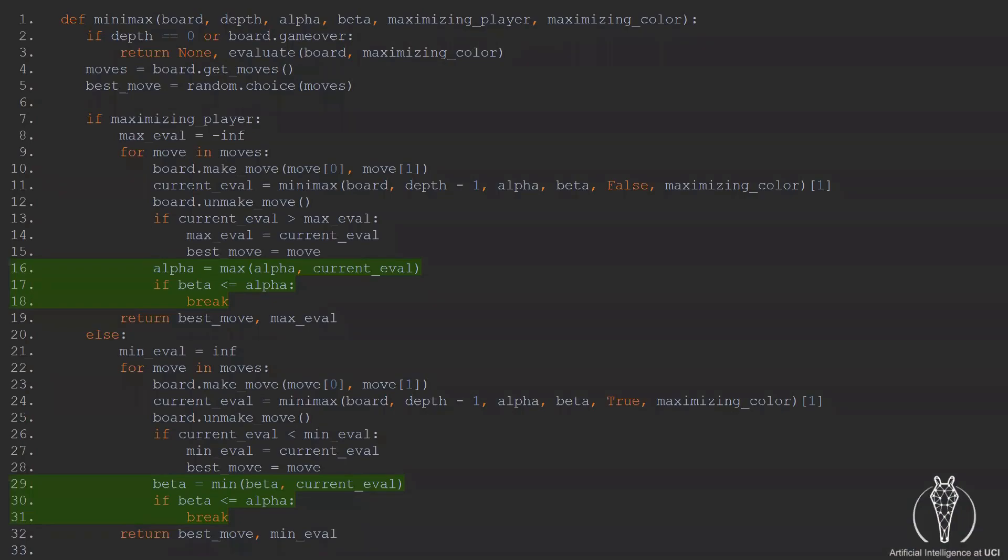If you want to add alpha beta pruning to your code, add these highlighted sections in green to your current code. Once again, feel free to pause the video.